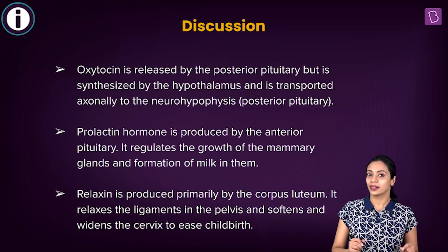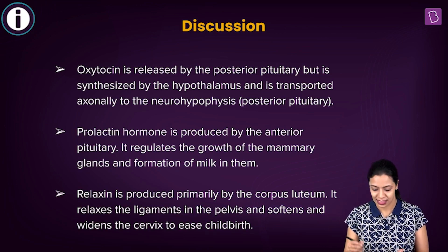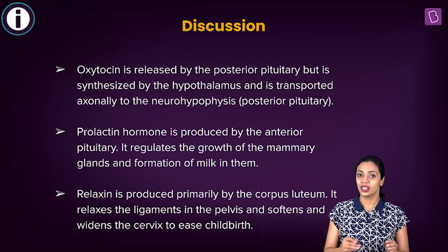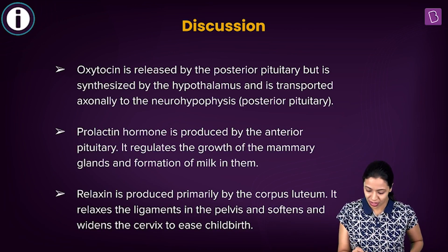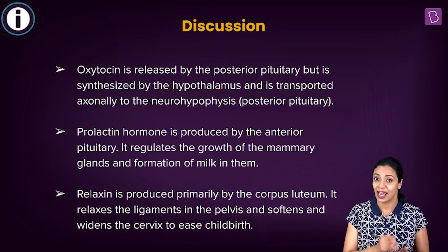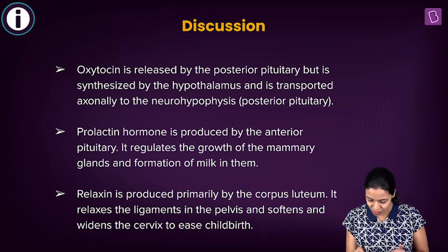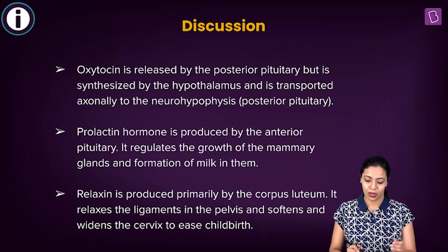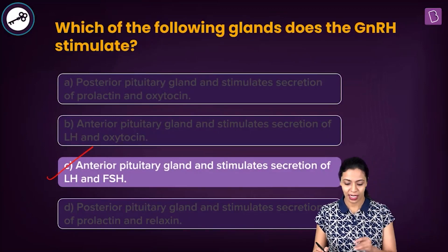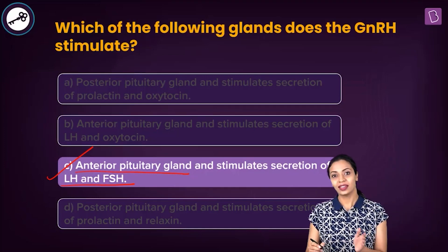Prolactin is a hormone produced by the anterior pituitary, responsible for regulating the growth of mammary glands and formation of milk during and after pregnancy. Relaxin functions to relax the ligaments in the pelvis — during childbirth the pelvis must widen, so relaxin softens and widens the cervix to ease delivery. Therefore, the correct answer is option C: GnRH stimulates the anterior pituitary gland to secrete FSH and LH, the gonadotropins.